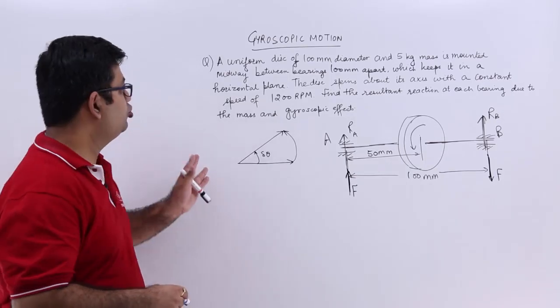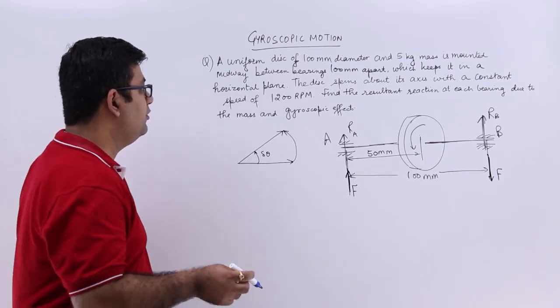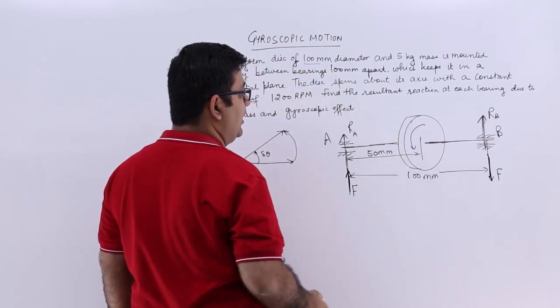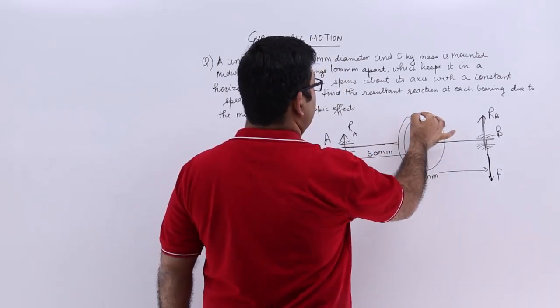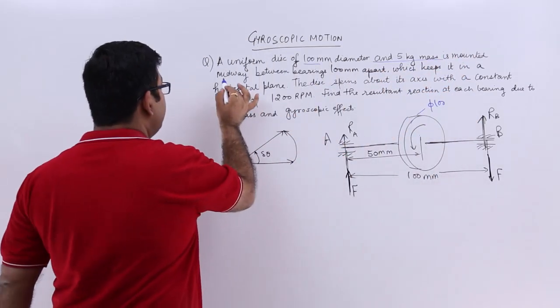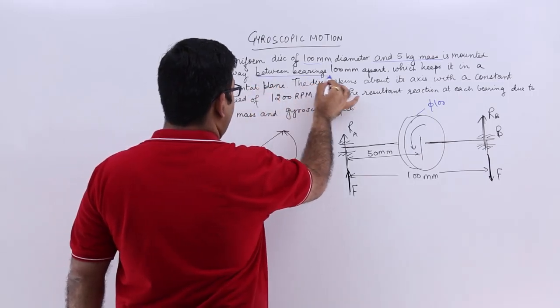The third question on gyroscopic couple says that we have a uniform disc of 100 mm diameter. This is the disc, diameter is 100 mm, so φ is 100, and 5 kg mass is mounted midway between bearings 100 mm apart.